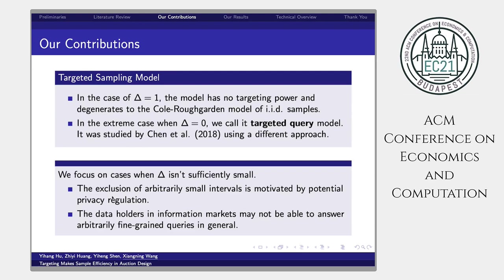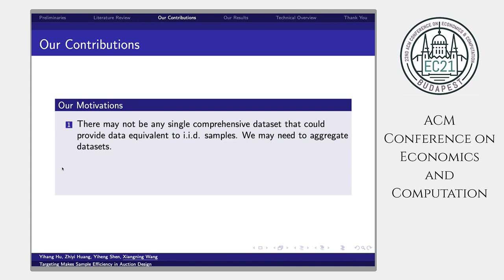In this paper, we mainly focus on cases when delta isn't sufficiently small. The exclusion of arbitrary small intervals is motivated by potentially privacy regulation. Further, the data holders in information markets may not be able to answer arbitrarily fine-grained queries in general. Our motivations are from two points. First, there may not be any single comprehensive dataset that could provide data equivalent to IID samples. For example, the dataset may only contain the top 1 over 2 portion of data. We may need to aggregate different datasets.